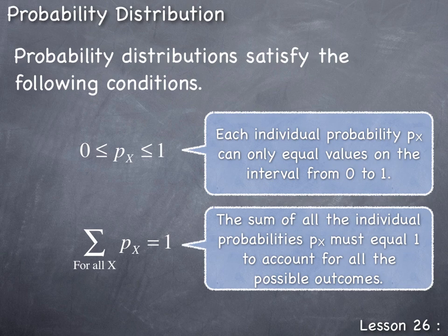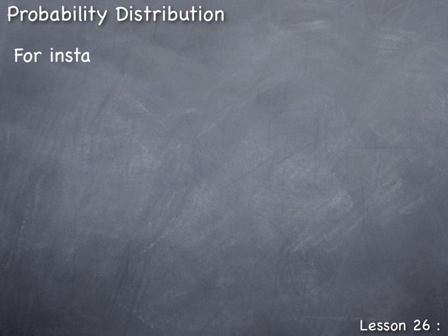This tells us that the sum of all the individual probabilities P(X) must equal 1 to account for all the possible outcomes. The probability distribution calculates the corresponding probabilities for all possible outcomes, so if you were to add up all the probabilities for all possible outcomes of the random variable X, it will always equal 1 or 100%, indicating it accounts for all possible outcomes.